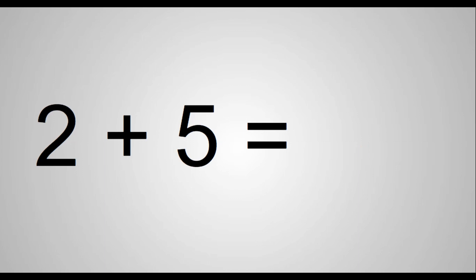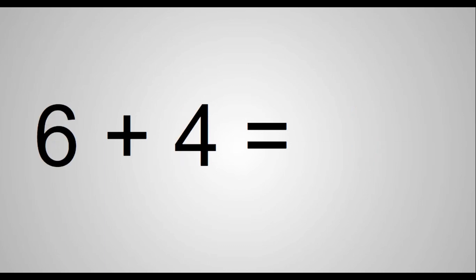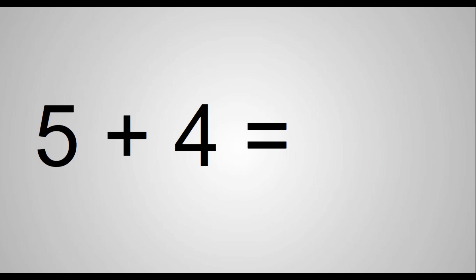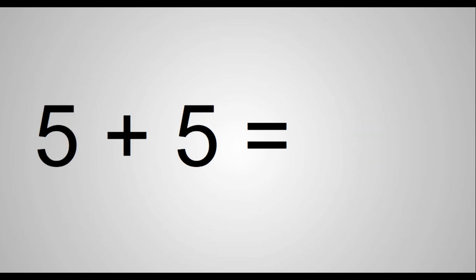Four plus five equals nine. Six plus four equals ten. Five plus four equals nine. One plus five equals six. Two plus three equals five. Five plus five equals ten. Three plus five equals eight. Two plus five equals seven.